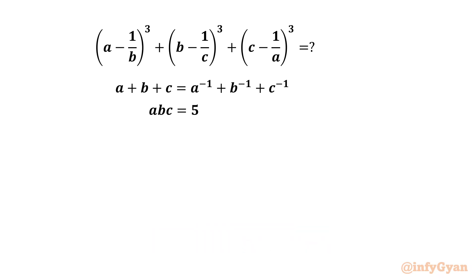Here we have to evaluate the expression (a minus 1/b)³ plus (b minus 1/c)³ plus (c minus 1/a)³, given that a plus b plus c equals a⁻¹ plus b⁻¹ plus c⁻¹, and a times b times c equals 5.